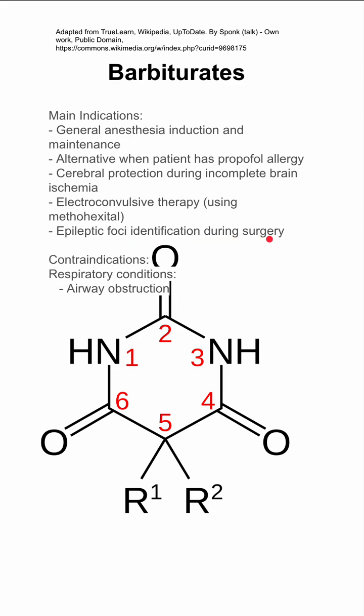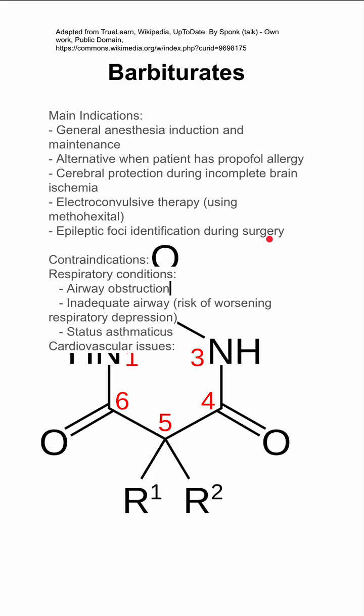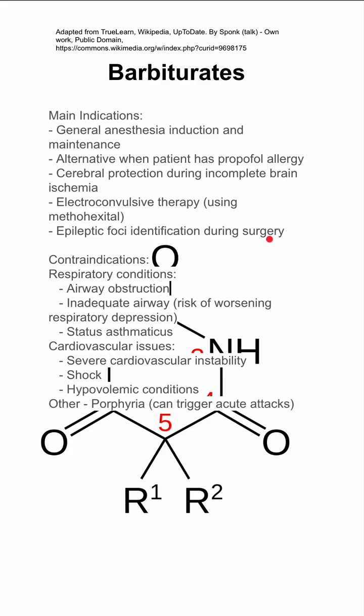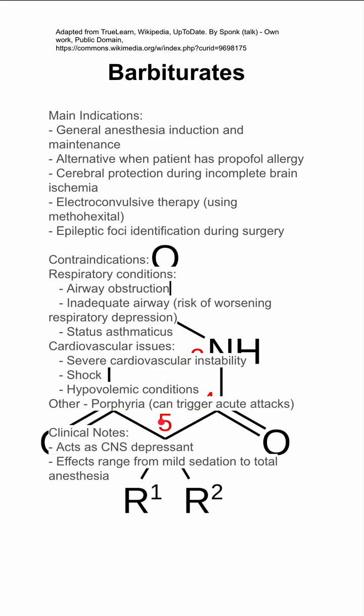Barbiturates are contraindicated in some respiratory conditions, including airway obstruction, inadequate airway, or status asthmaticus. They also should not be used in these cardiovascular conditions: severe cardiovascular instability, shock, and hypovolemic conditions. They can also trigger acute porphyria attacks.